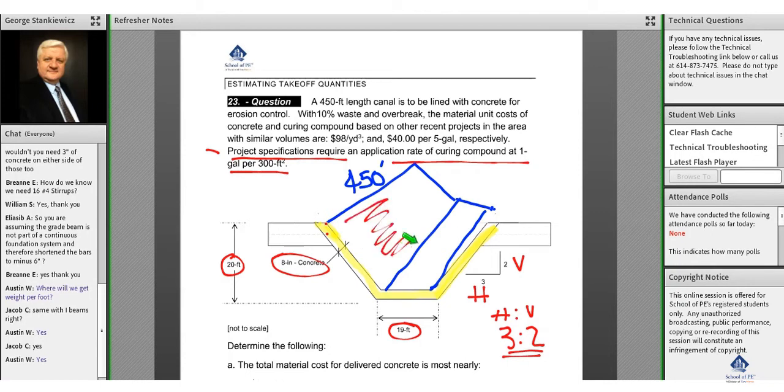The curing compound, if you're familiar with the term, is basically a paint - it's a liquid applied surface coating that is used on the concrete, so we basically paint the surface of it after we pour the concrete.